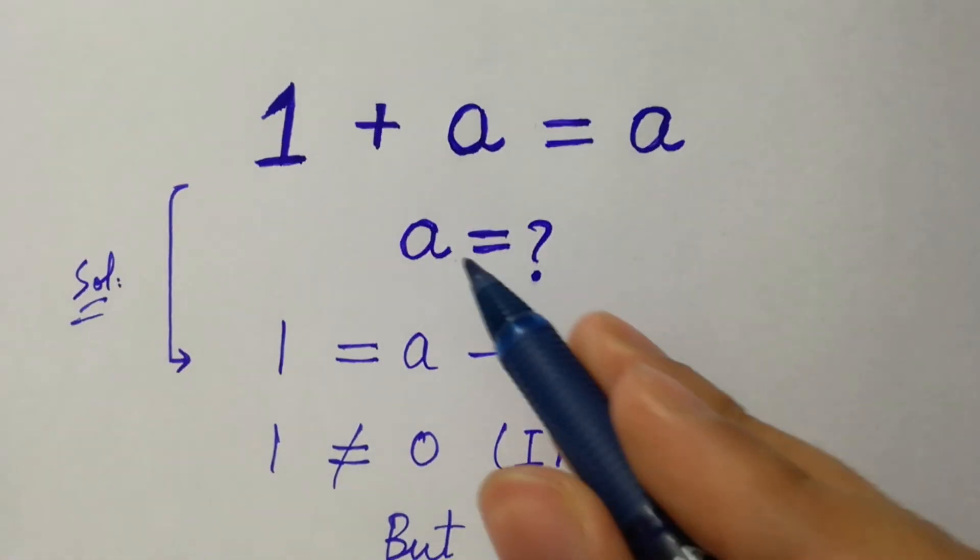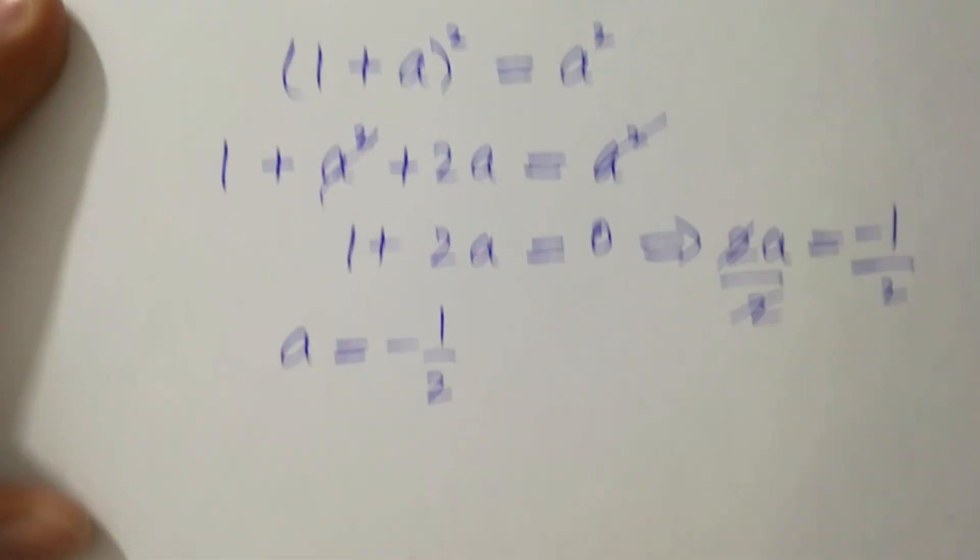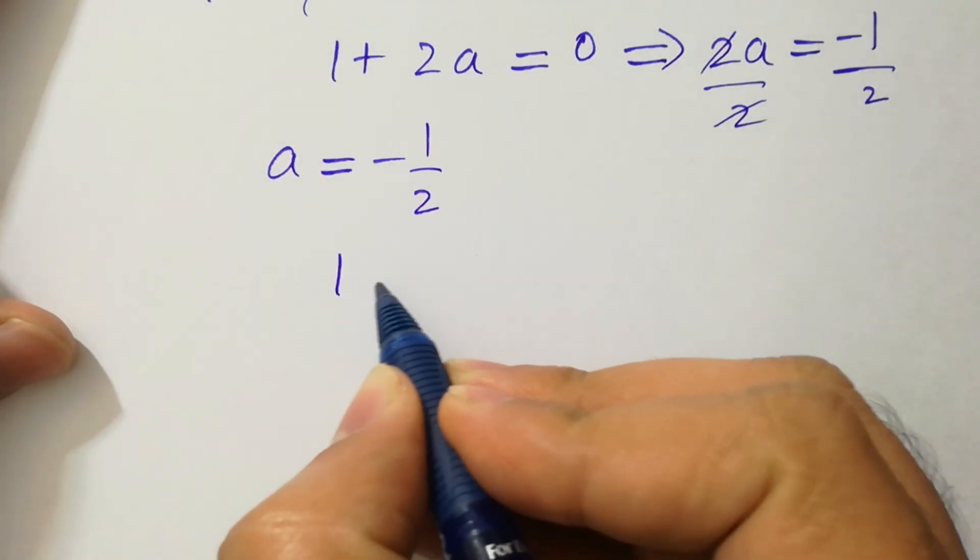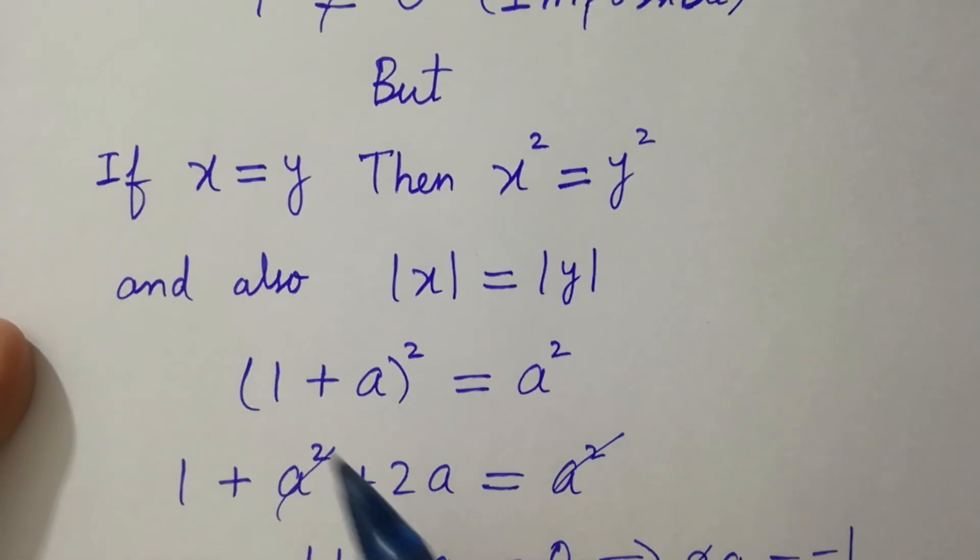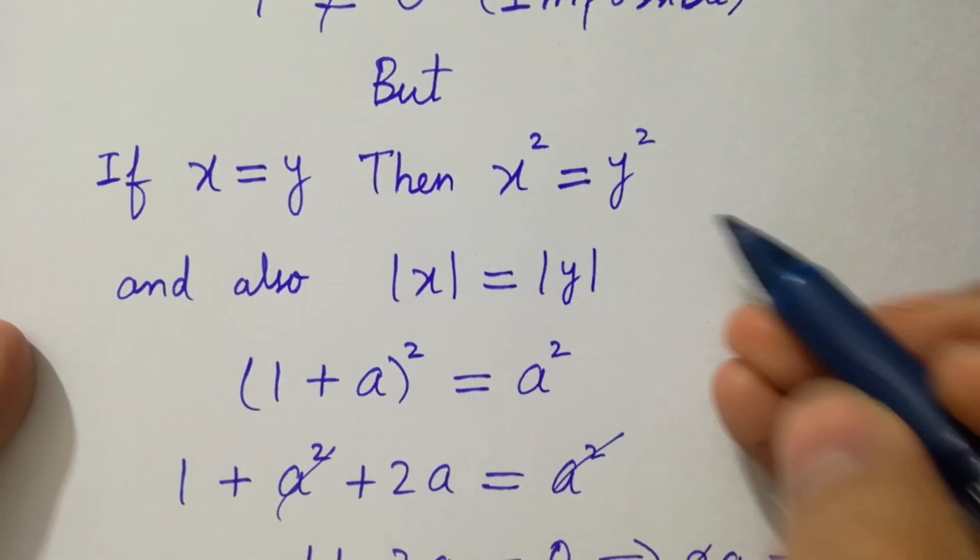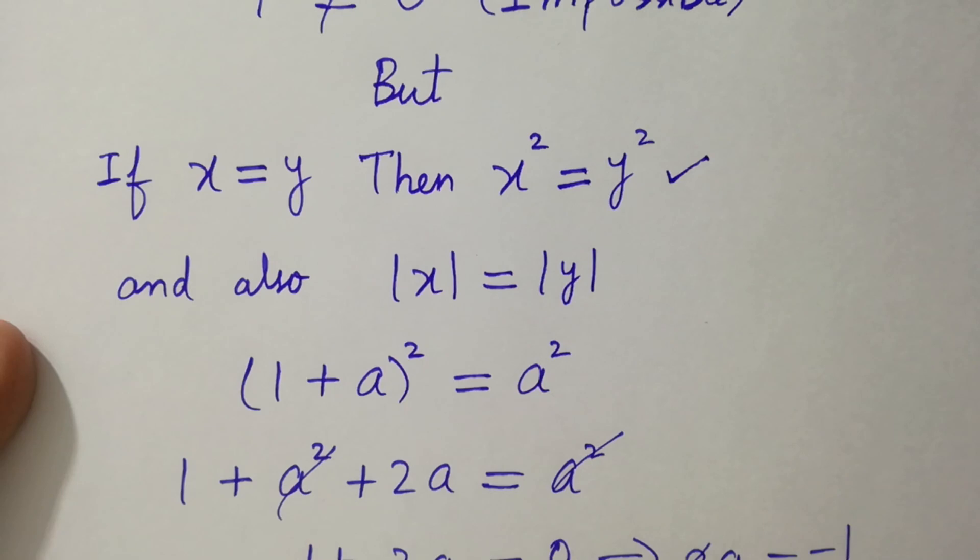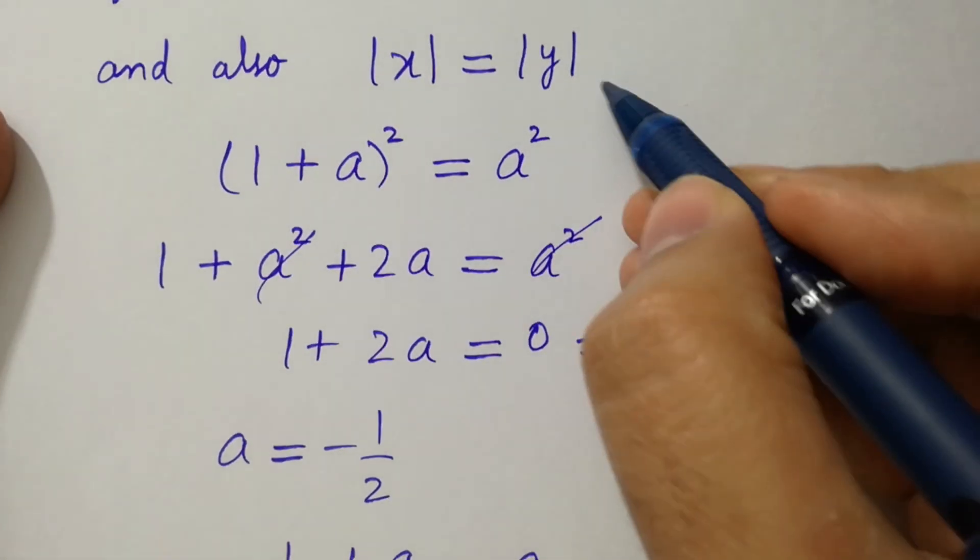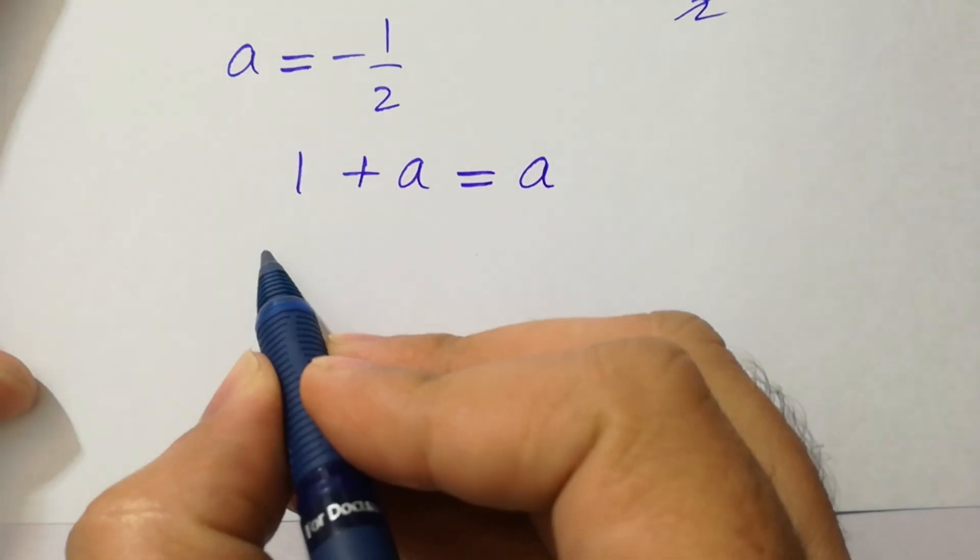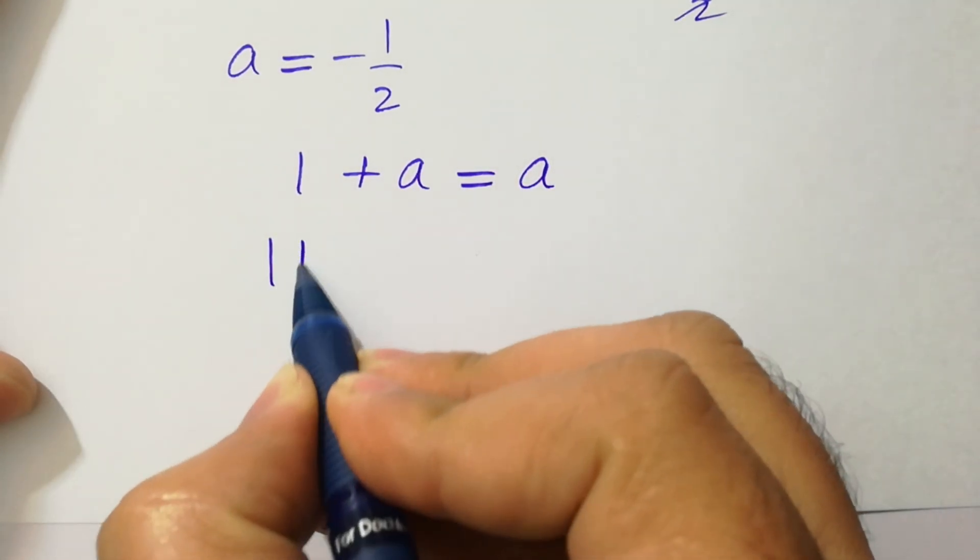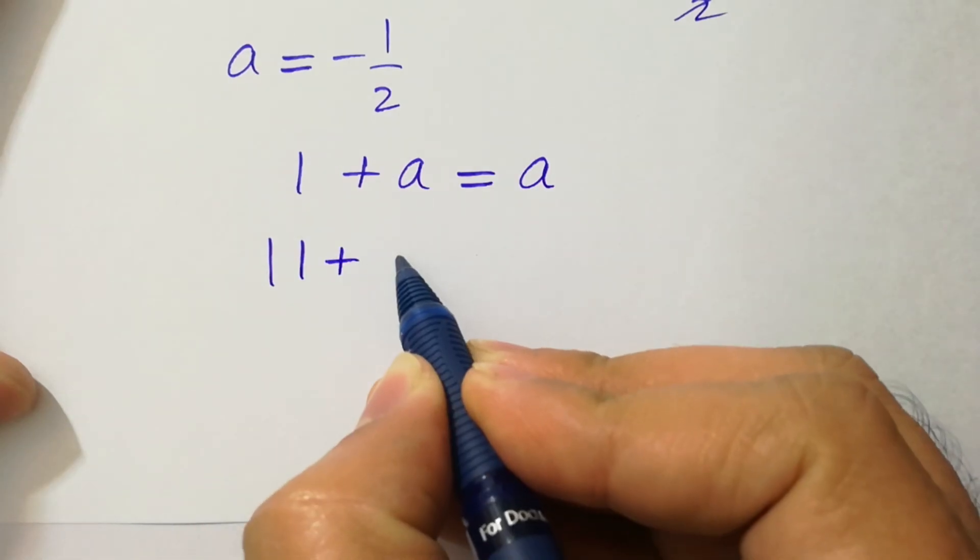We have the problem 1 plus a equals a. If x equals y, then x squared equals y squared, and also absolute value of x equals absolute value of y. According to that, we can take modulus on both sides.